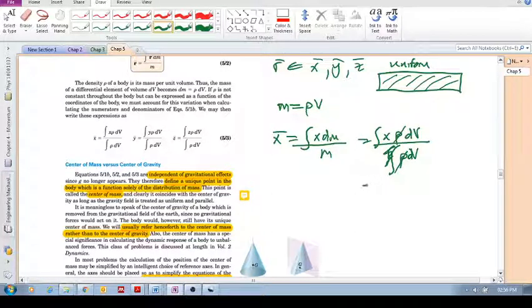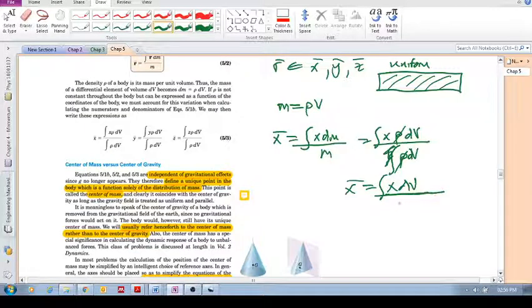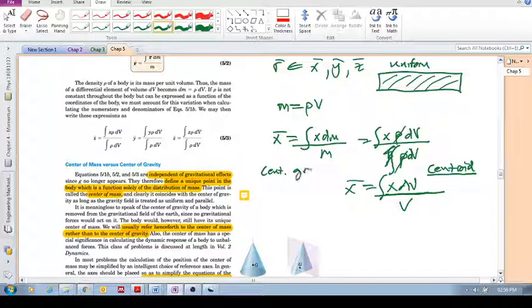And we say then we've got x-bar is x dv over the total volume. And then this idea here is called the centroid. The centroid, which we'll get into. I'm giving you a foretaste here. So we move from center of gravity, we move to center of mass, and then we can move to the centroid.